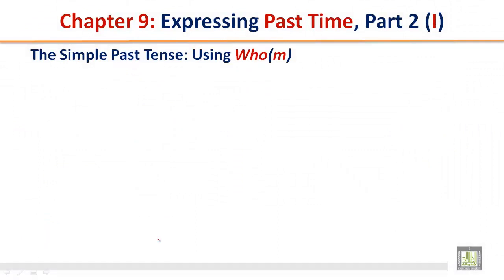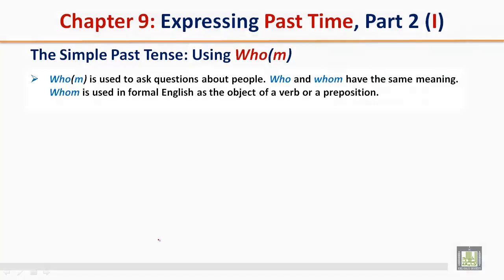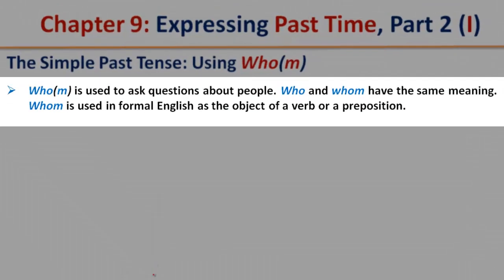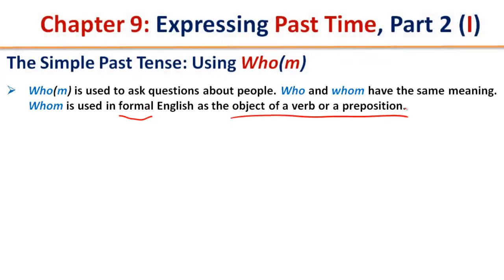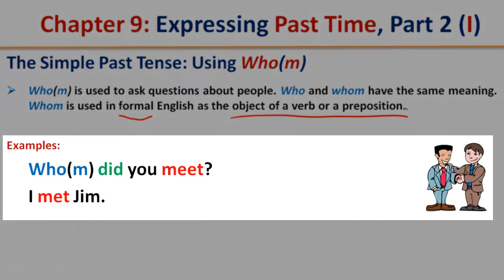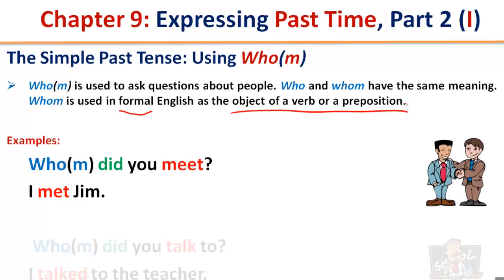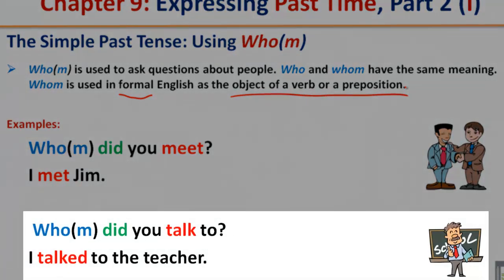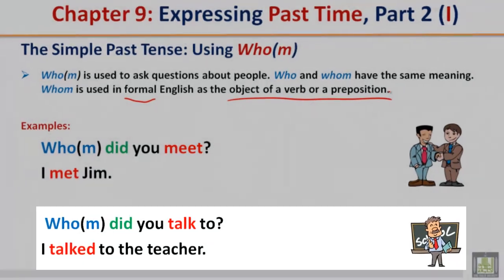The simple past tense using whom or who. Who or whom is used to ask questions about people. Who and whom have the same meaning. Whom is used in formal English as the object of a verb or a preposition. Who did you meet? Or whom did you meet? I met Jim. Who or whom did you talk to? I talked to the teacher.